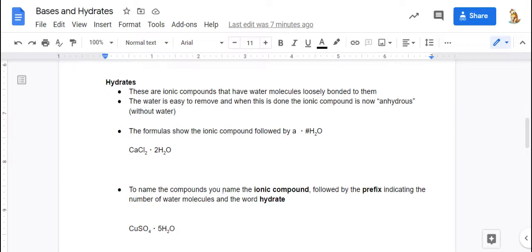So the formulas show the ionic compound followed by a dot. It's not a period because it's raised up in the middle. And then there's a number and then there's H₂O. So the number indicates how many water molecules are bonded to the unit, the formula unit for the ionic compound. So for instance, CaCl₂·2H₂O, that's calcium chloride. And it has two water molecules bonded to it for each unit of calcium chloride there are. So calcium chloride is a repeating unit in the compound. And each time you have a CaCl₂, you have two water molecules.